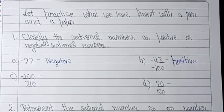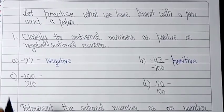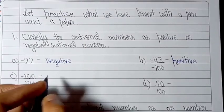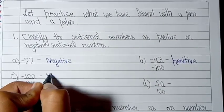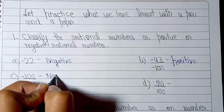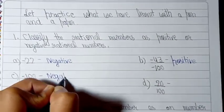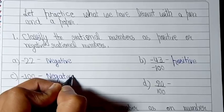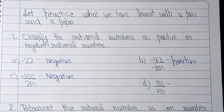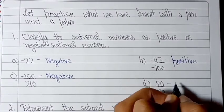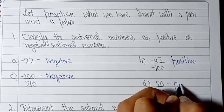The next part is -100/210. One number is negative, so the answer will be negative. In the next part, both numbers are positive, so the number will be a positive rational number.